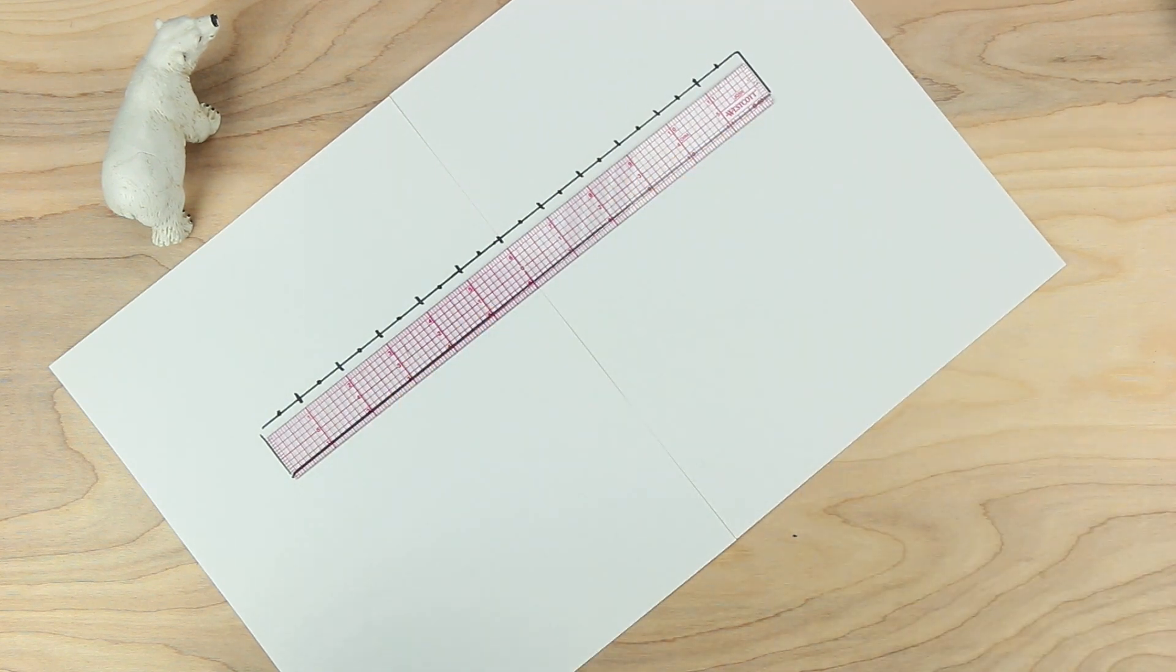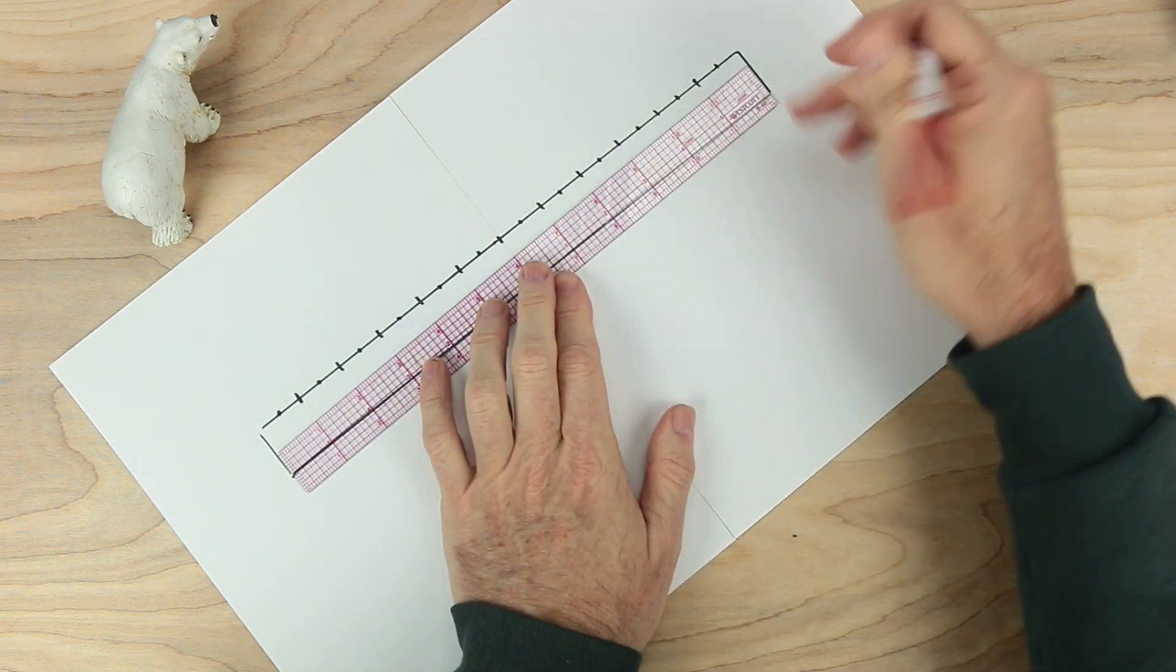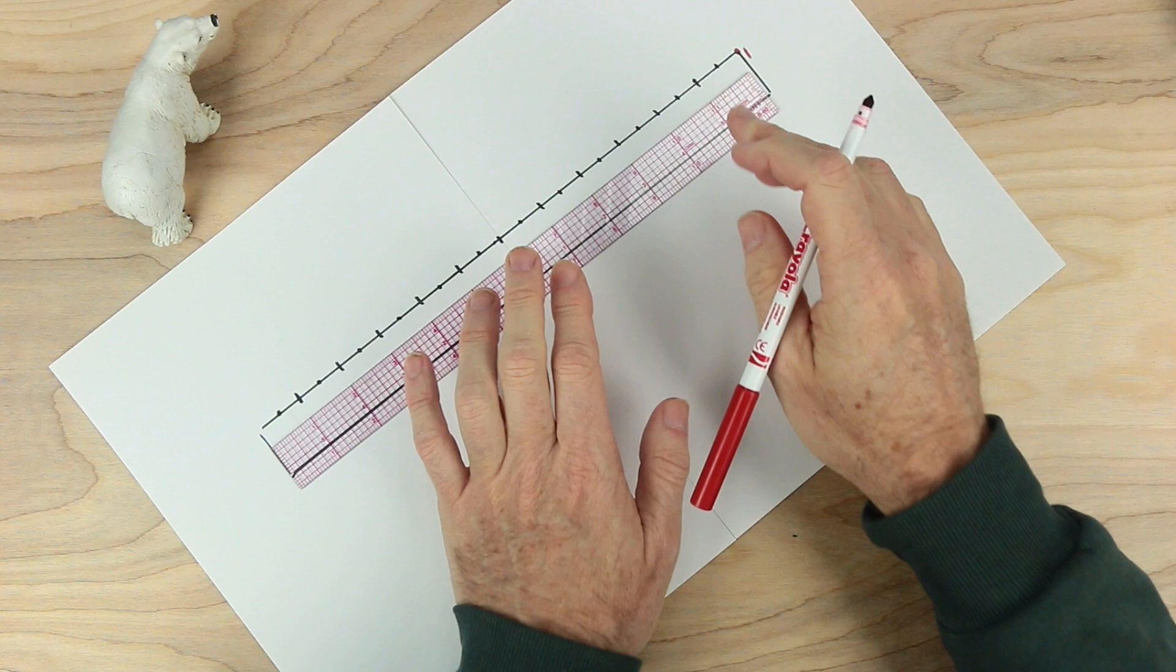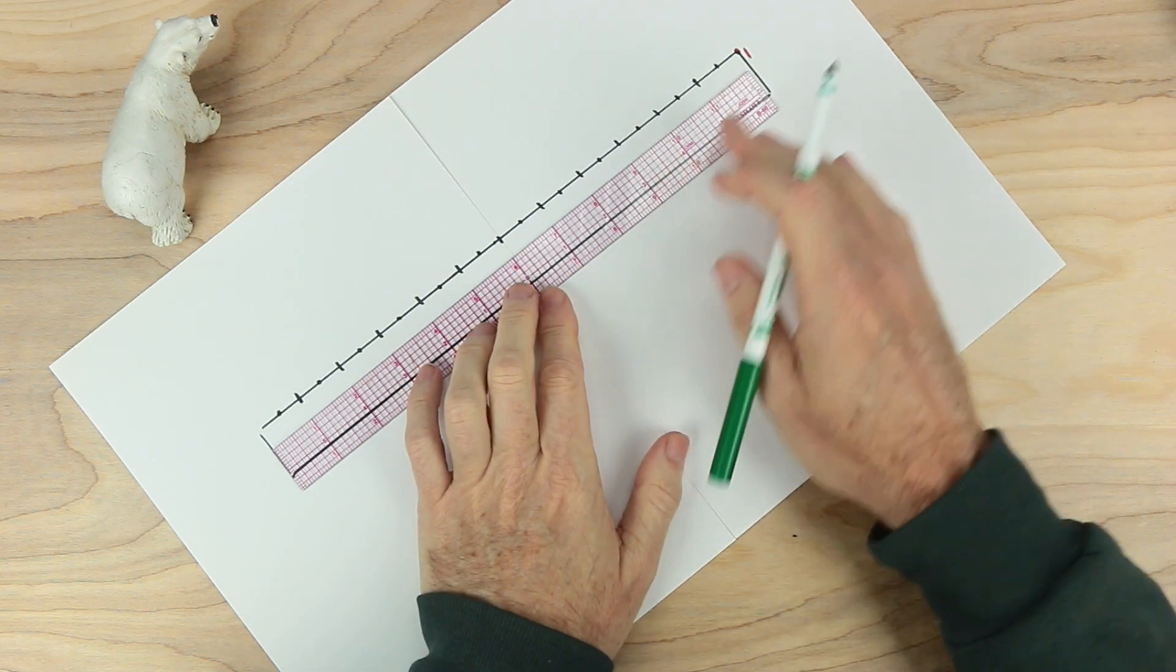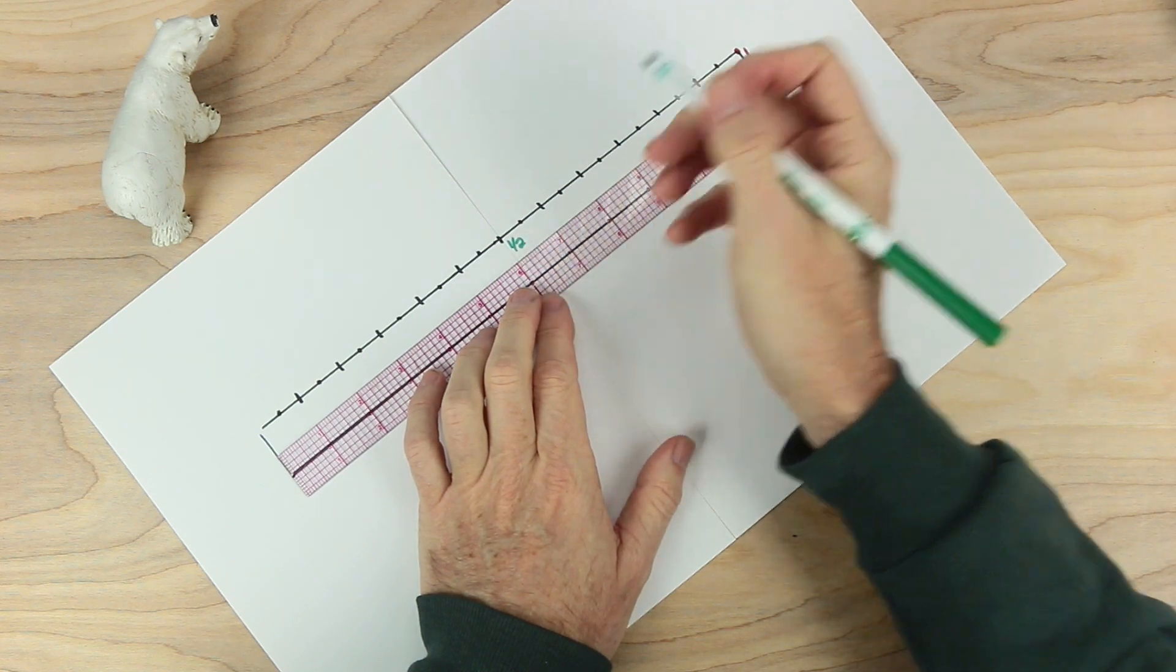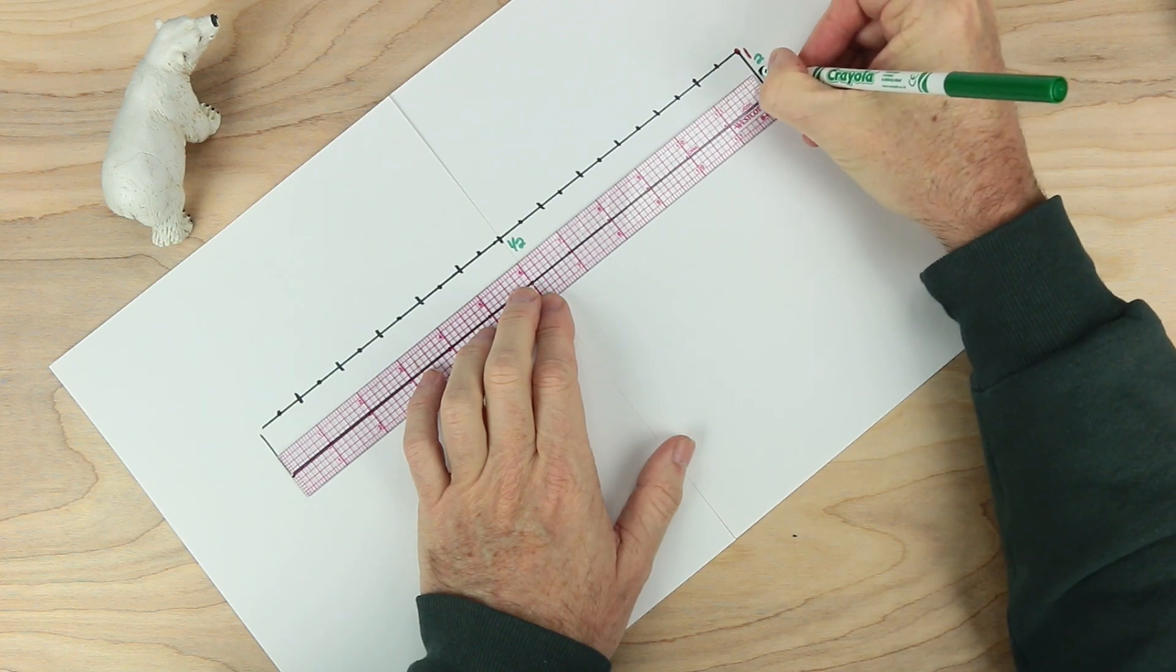Now I'm going to start numbering my ruler. Let's start at the very end here. We're going to call this whole measure just one. So this very end here is going to be our one. Now I'm going to measure a half. If this is one, then right about here at the six, it's going to be one half.